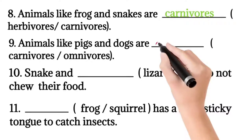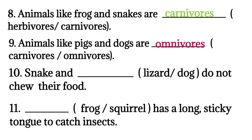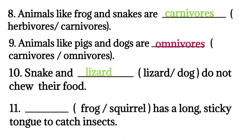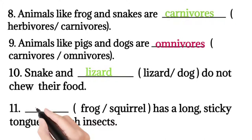Question nine: animals like pigs and dogs are omnivorous or carnivorous? Correct answer: omnivorous. Pigs and dogs eat both plants and flesh of other animals. Question ten: snake and lizard or dog do not chew their food? Correct answer: lizard. They swallow their food as a whole. Animals eat different types of food and their eating habits are also different.